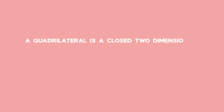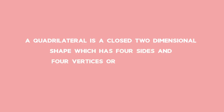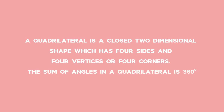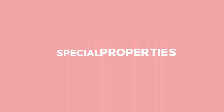A quadrilateral is a closed two-dimensional shape which has four sides and four vertices or four corners. The sum of angles in a quadrilateral is 360 degrees. Now some of our quadrilaterals have special properties.